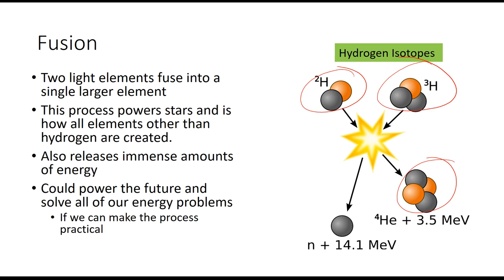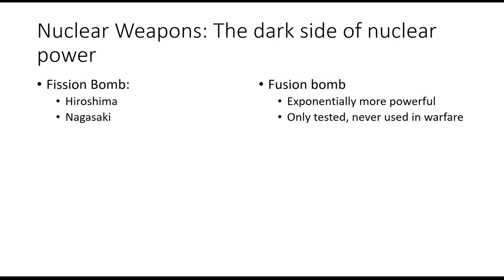The dark side of nuclear power is nuclear weapons. We can use either fission or fusion for weapons. Fission bombs using plutonium or uranium were what we used in World War II — Hiroshima and Nagasaki were fission bombs. Since then, we've developed fusion bombs, also called thermonuclear weapons, which actually use a fission bomb to detonate a fusion bomb.